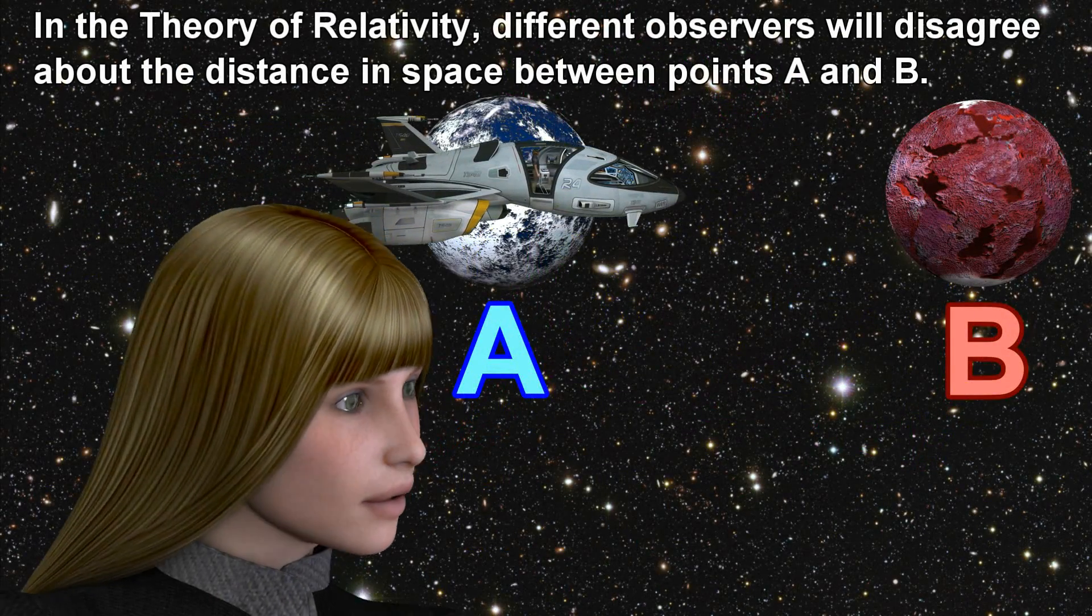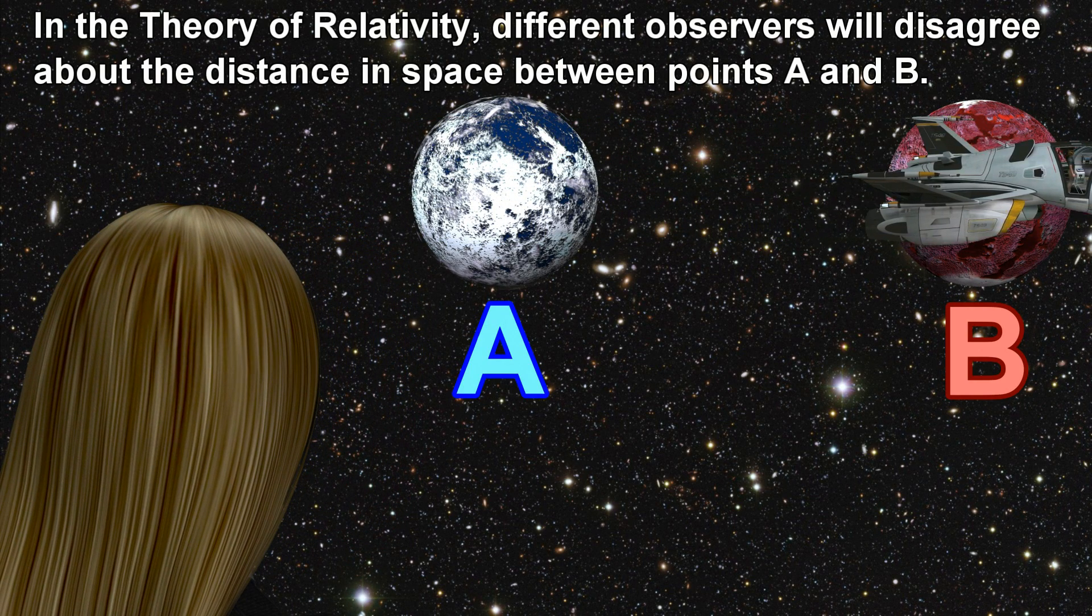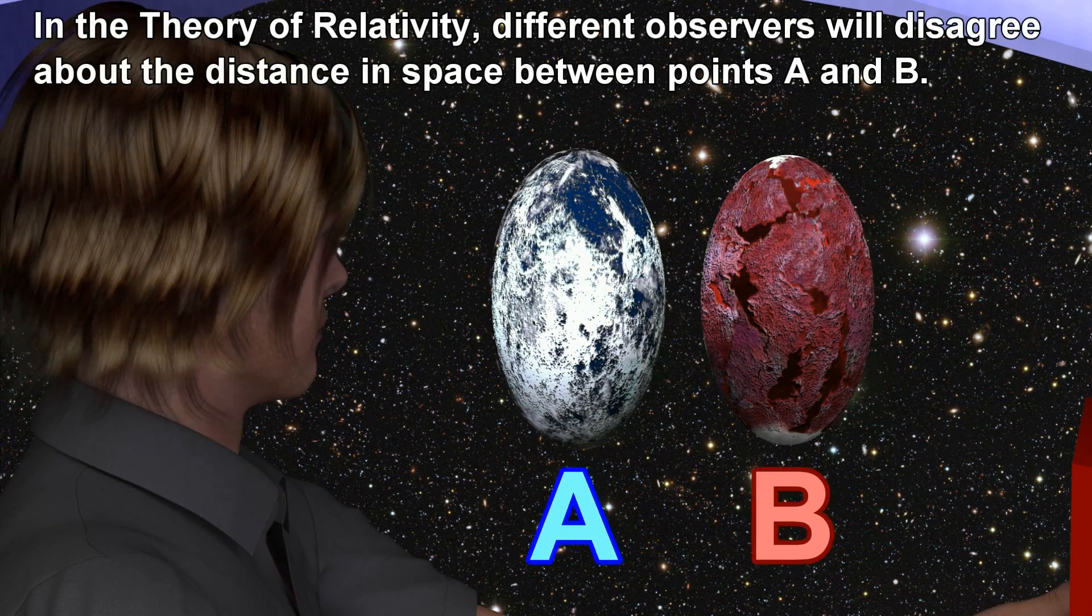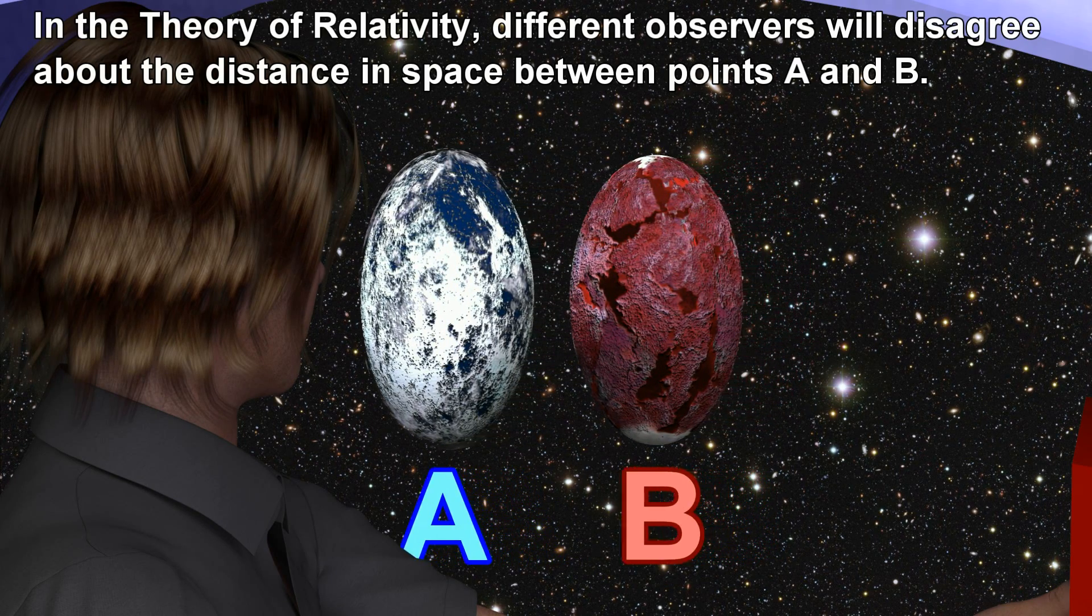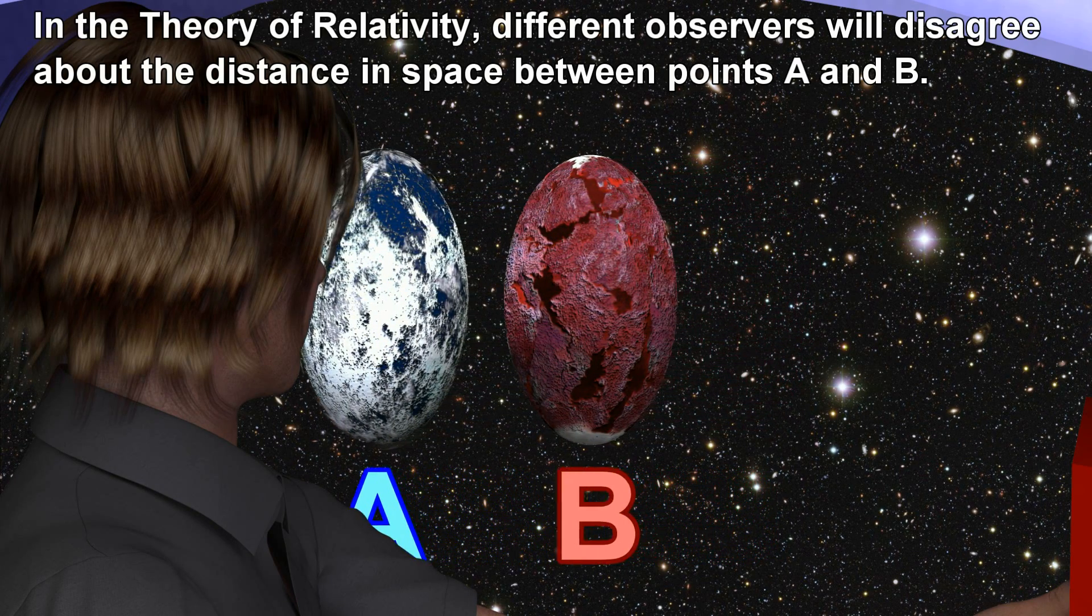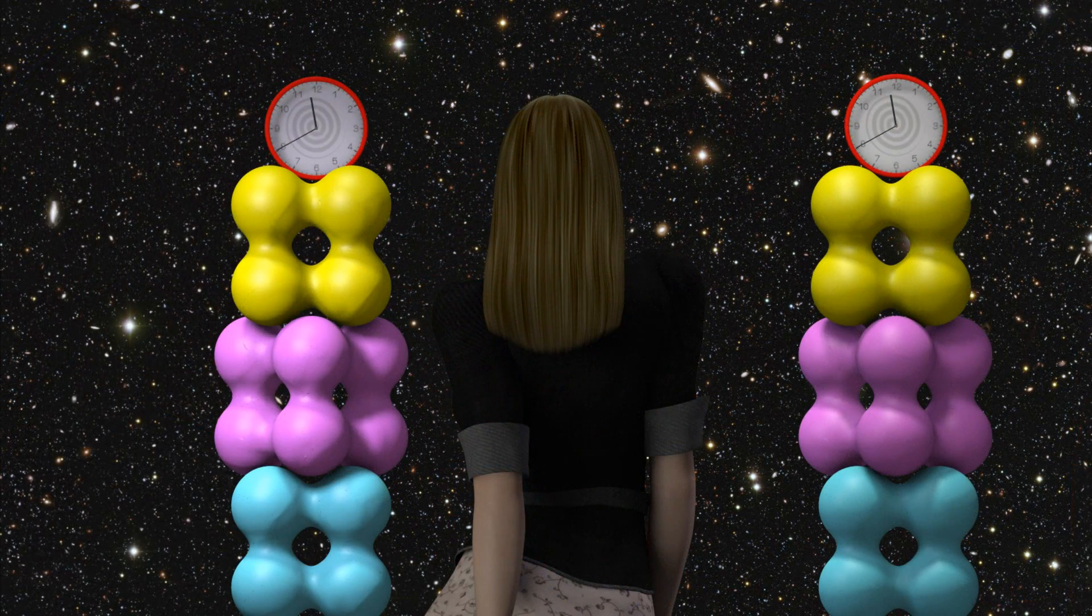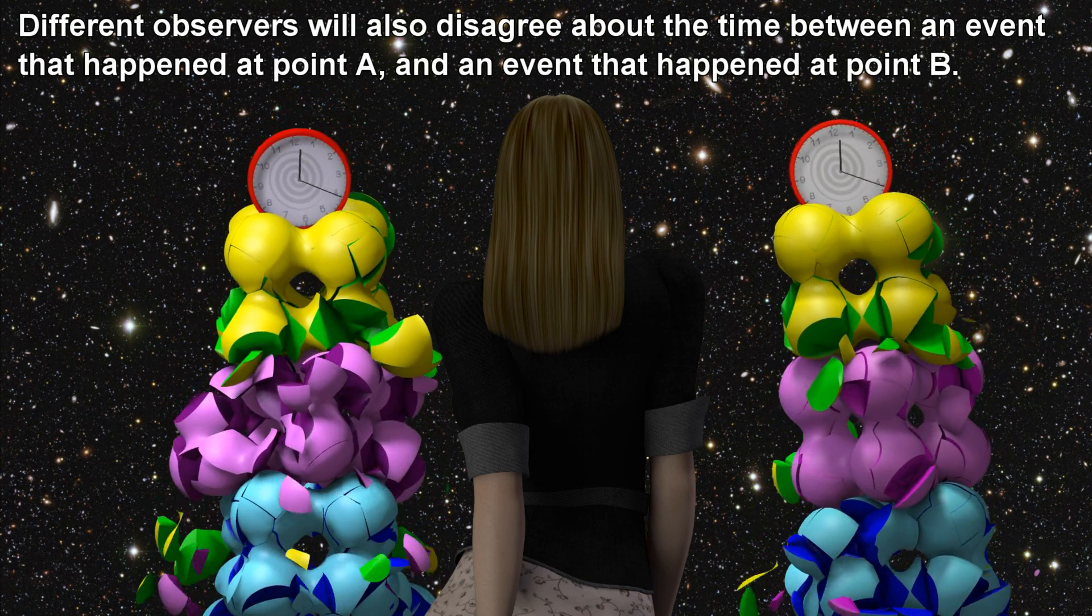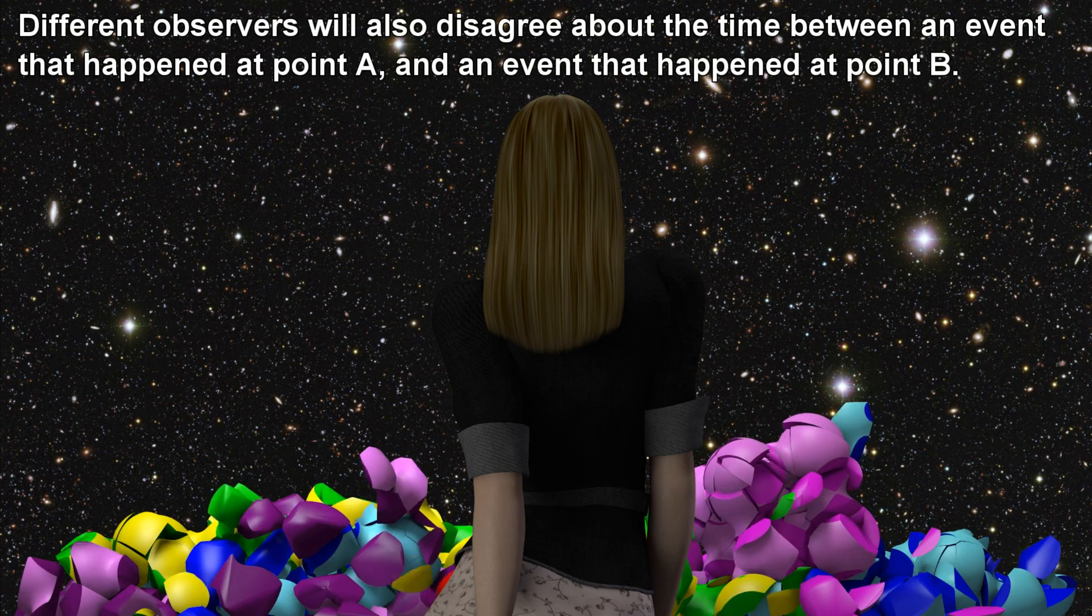In the theory of relativity, different observers will disagree about the distance in space between points A and B. Different observers will also disagree about the time between an event that happened at point A and an event that happened at point B.